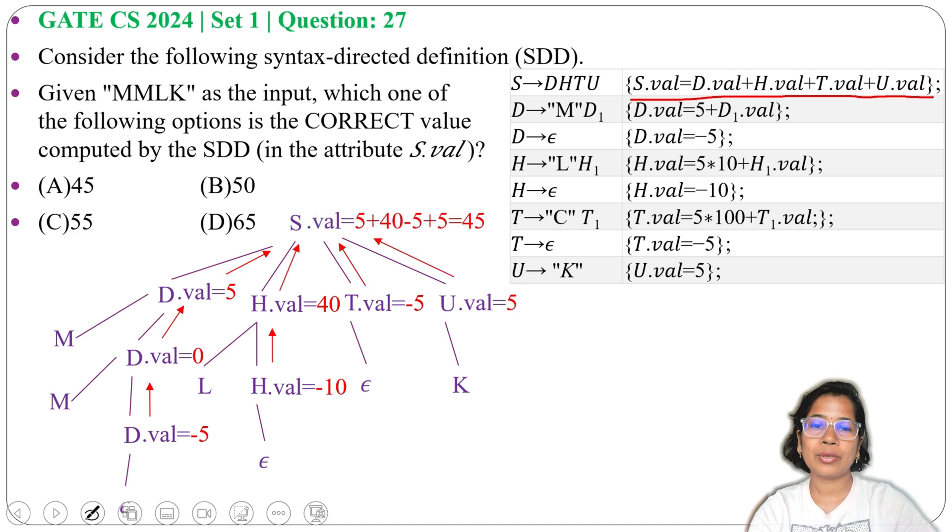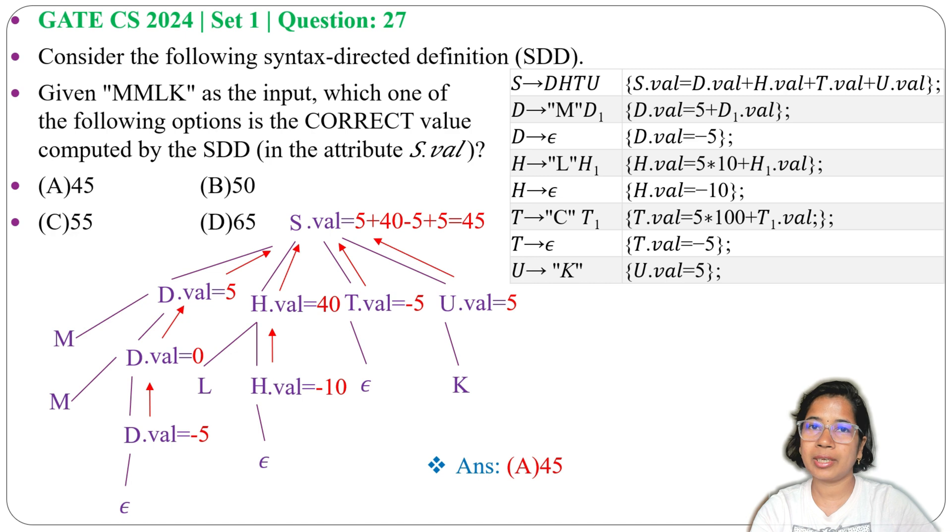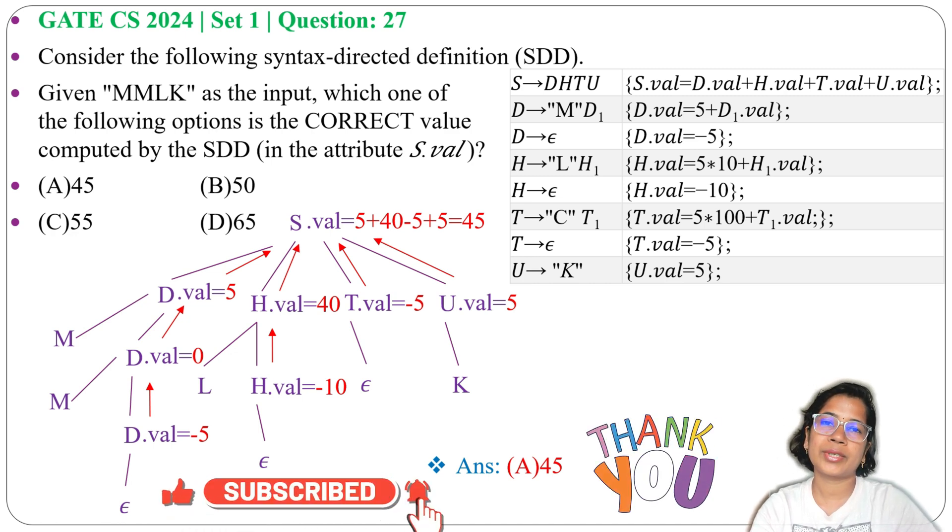So the answer is 45. It's present in option A. Answer is option A: 45. I already discussed similar type of examples during lectures. Just go through compiler design lecture, it's present in chapter 3. And if this lecture is helpful for you, please like, share, and subscribe. Thank you.